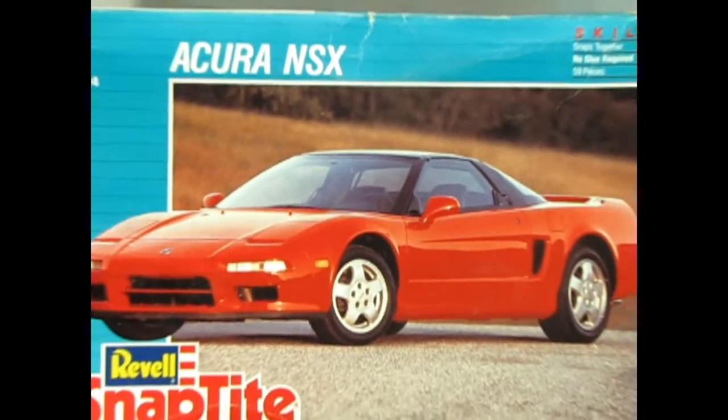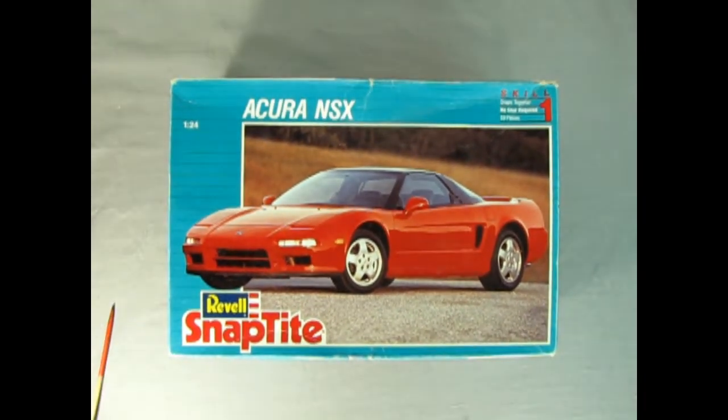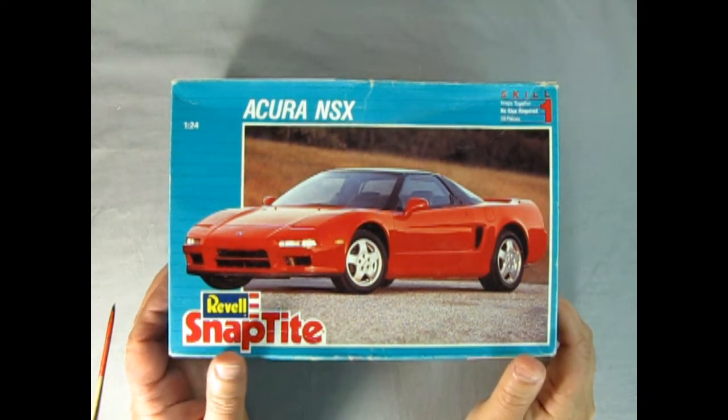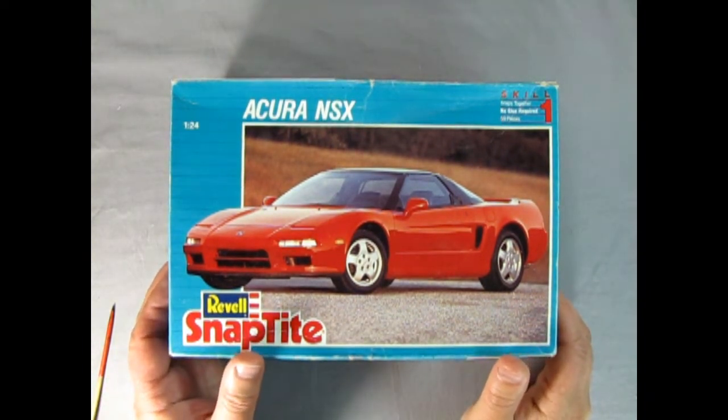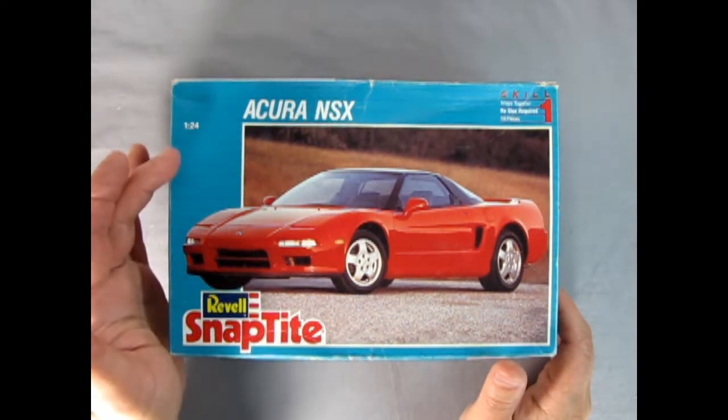And now we go all the way back to 1992 as we look at the Revell Snap Tight Acura NSX. This is a skill level one model kit from Revell and has 59 pieces. There's no glue required and it snaps together. It's 1:24 scale.